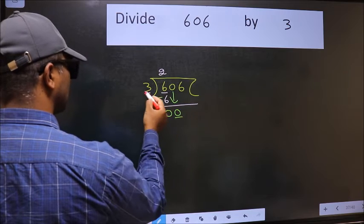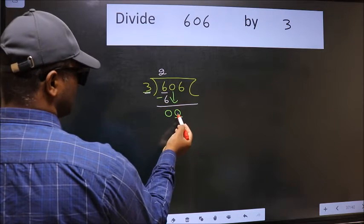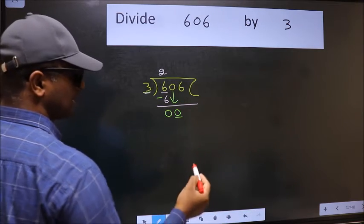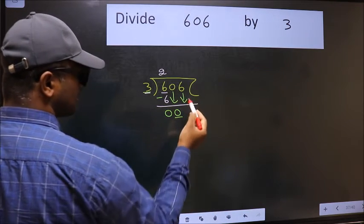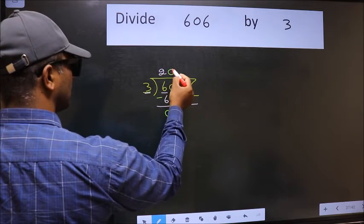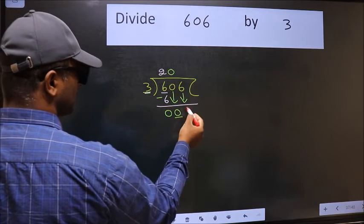Now here we have 0 and here 3. 0 is smaller than 3. So we should bring down the second number. And the rule to bring down the second number is we should put 0 here. Then only we can bring this number down.